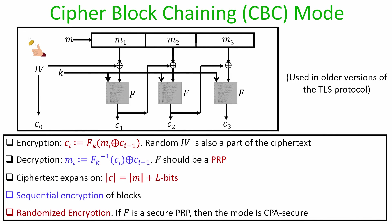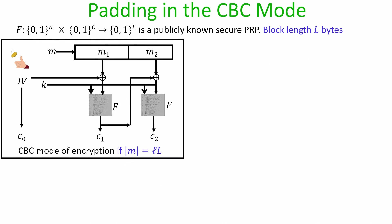Importantly, CBC is a randomized encryption process — every time a new message is encrypted, the IV is picked randomly, triggering randomness throughout the entire chaining process. In fact, we can formally prove that if the underlying function f is a secure PRP under the indistinguishability definition, then CBC mode is indeed CPA secure. See references such as the book by Katz-Lindell or the book by Boneh et al. for the actual proof.